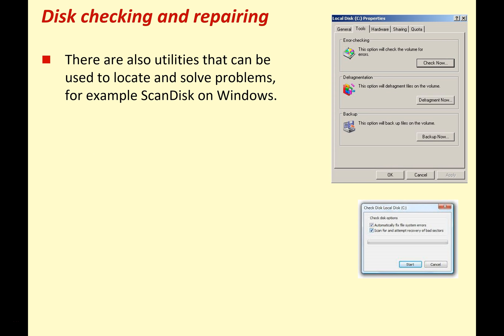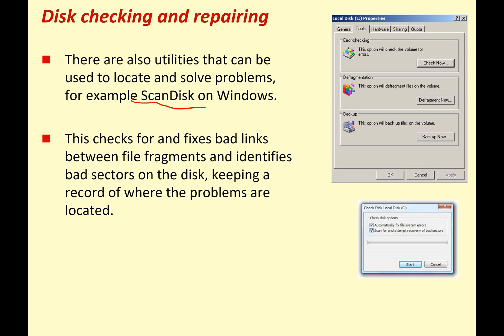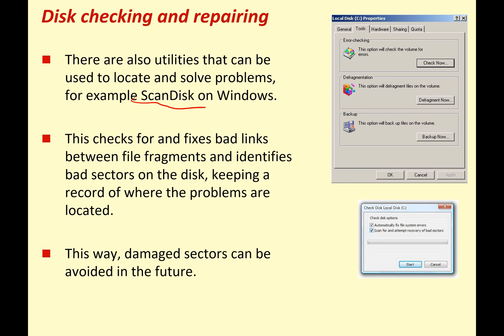Disk checking and repairing — there are also utilities that can solve problems on your hard drives, for example ScanDisk on Windows. This checks for and fixes bad links between file fragments and identifies bad sectors on your disk, keeping a record of where problems are located so damaged sectors can be avoided in future. Over time, magnetic sectors stop working properly, so you don't want to save or read data from them. ScanDisk marks off damaged sections so they won't be used again, and attempts to recover and move data from damaged sectors to undamaged ones.